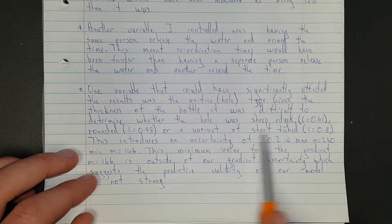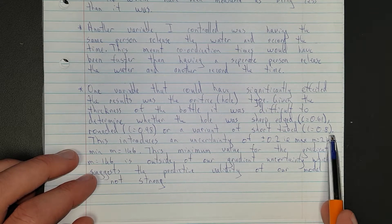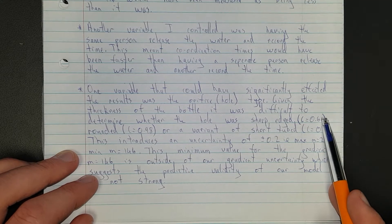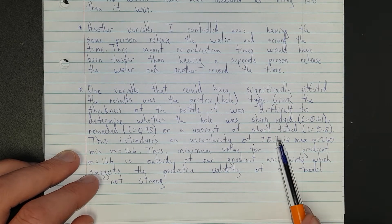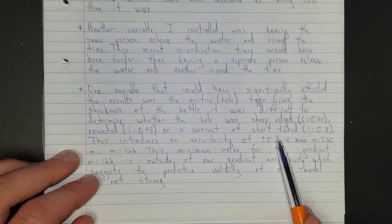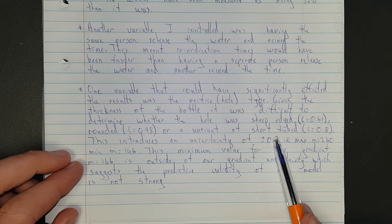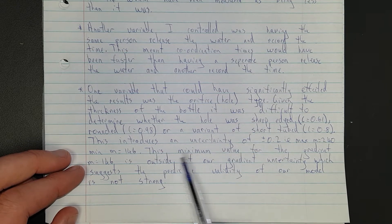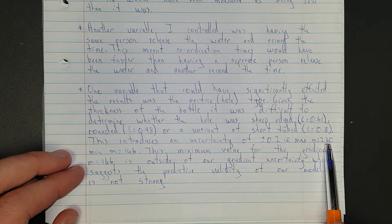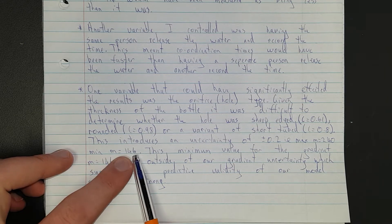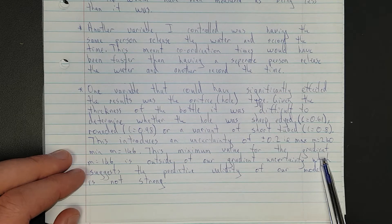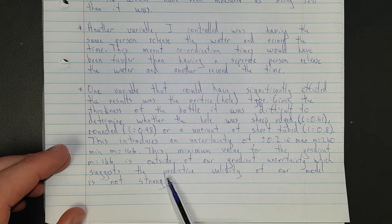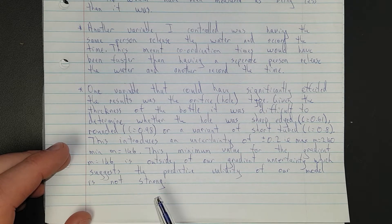So I have said, or a variant of the short tubed with a C of 0.8. This introduces an uncertainty of plus or minus 0.2 because the maximum is basically one and the minimum is basically 0.6. SF, or your uncertainties always have to be to 1 SF. That's just the general rule. So complete range of 0.4 covers from 0.61 to basically 1. So the max is 240, which was our gradient, but the minimum gradient value is 146. This minimum value for the gradient 0.6 is outside our gradient uncertainty.